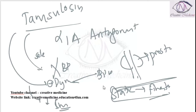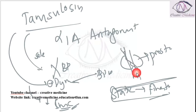Because Tamsulosin decreases the smooth muscle contraction of the prostate, it causes easy urine excretion. Finasteride, on the other hand, affects the static component.